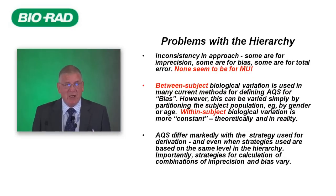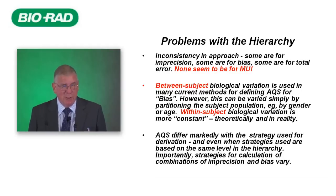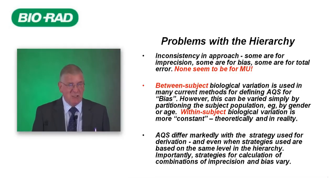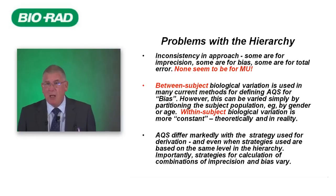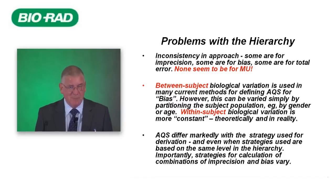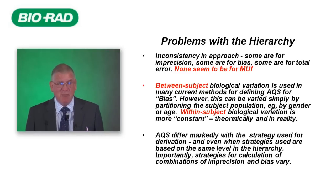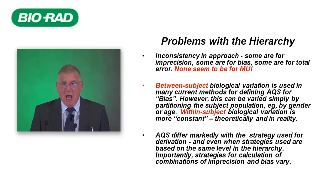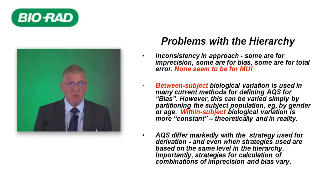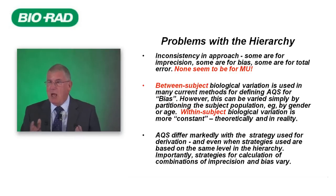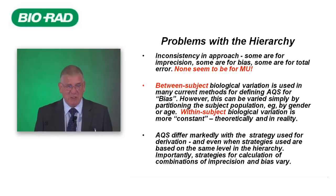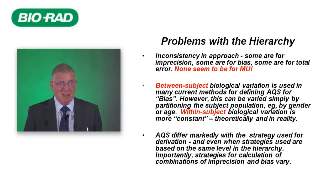No one thinks the hierarchy is perfect, and it certainly shouldn't be seen as monolithic or set in stone. Throughout the hierarchy there is an inconsistency in approach: some strategies give goals for imprecision, some for bias, some for total error, but so far none are for measurement uncertainty. Moreover, between-subject biological variation is used in many current methods for determining allowable bias. However, you can vary between-subject biological variation by partitioning the population according to gender or age. Within-subject biological variation is much more constant, both theoretically and in reality.